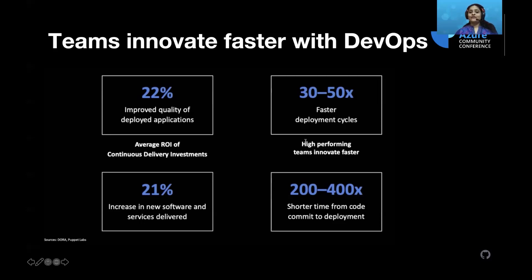22% improved quality of their applications. We've seen customers getting faster deployment cycles by 30 to 50 times. Customers practicing DevOps help them take their code from commit to deployment 200 to 400 times faster. That's very significant - it helps them increase their developer velocity, thereby delivering continuous value to their customers. Now there are many ways to achieve continuous delivery for any given cloud. You could use Jenkins or Azure Pipelines, but in today's session I will showcase how to achieve continuous delivery using GitHub Actions.